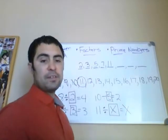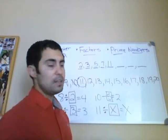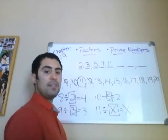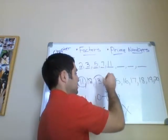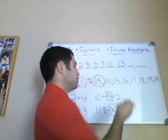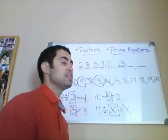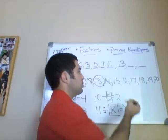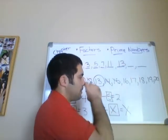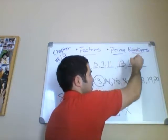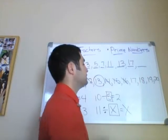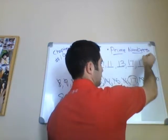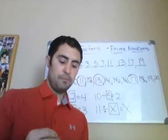12 divided by 4 is 3, so 12 is not prime. 13 — can you divide that and get an even answer? Nope, so 13 is a prime number. 14 divided by 7 is 2 — if we can divide it, it is not prime. 15 divided by 5 is 3, so 15 is not prime. 16 divided by 4 is 4 — not prime. 17 is a prime number — can't divide it evenly. 18 divided by 9 is 2. 19 — there you go. So those are the next four prime numbers: 11, 13, 17, and 19.